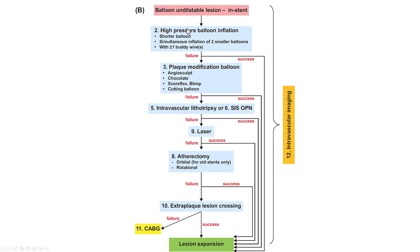This is the algorithm for treating balloon-undilatable lesions, specifically for in-stent lesions. Most of the time we start with high-pressure balloon inflation — either a standard non-compliant balloon at 26–28 atmospheres, or a plaque modification balloon such as the AngioSculpt, Chocolate, or Corflex. If that doesn't work, we use intravascular lithotripsy or a very high-pressure balloon, followed by laser with contrast, then atherectomy. Extra-plaque approaches are a last resort. Intravascular imaging is critical to confirm good expansion, and before placing a stent, a balloon sized one-to-one to the reference must be expanding well into the vessel.